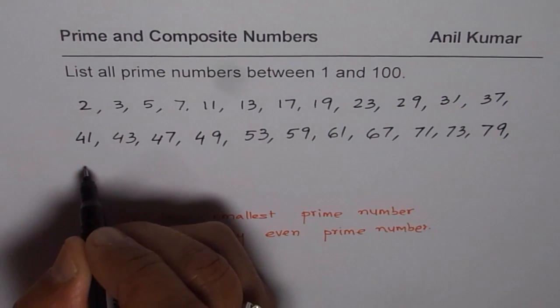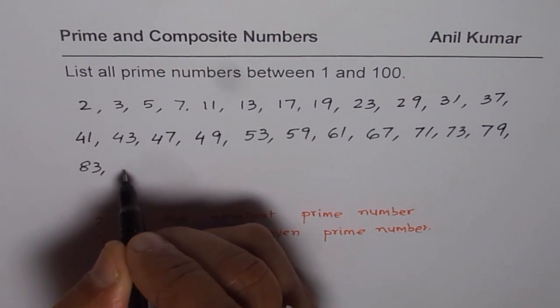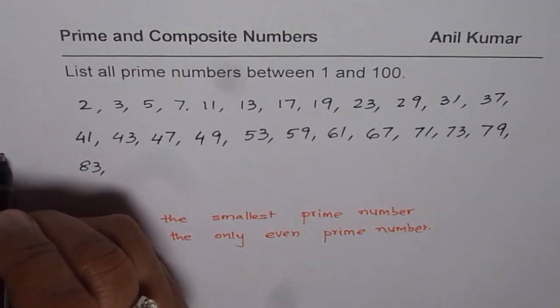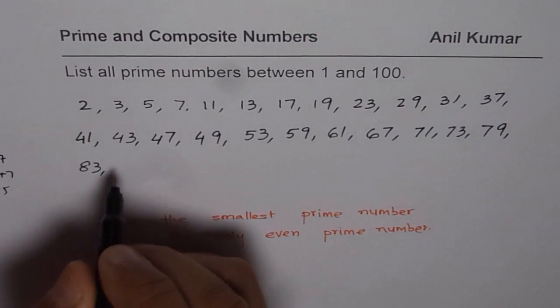We will check later. 80, 81 - 9 times 9 is 81. 82 is even. 83, let me write down 83. 84, 85, 86 even, 87. Now 87, 8 plus 7 is 15, so it can be divided by 3, so it is not prime. It could be divided by 3.